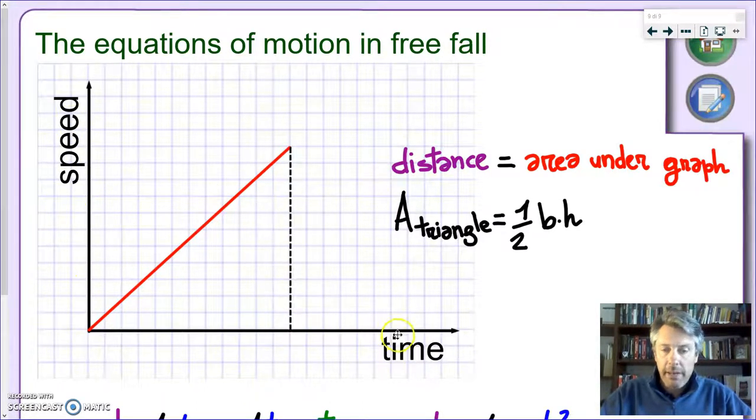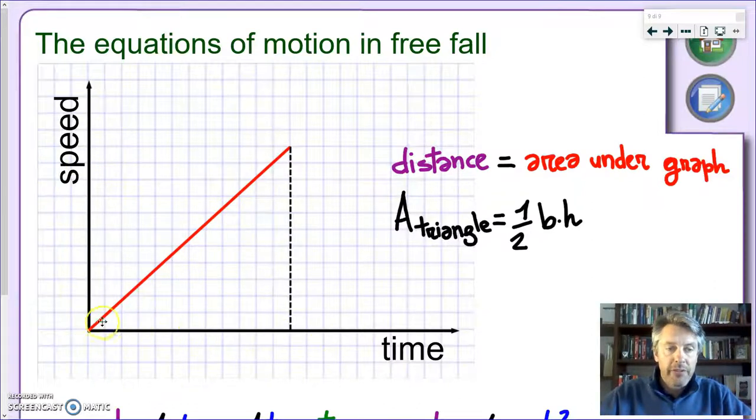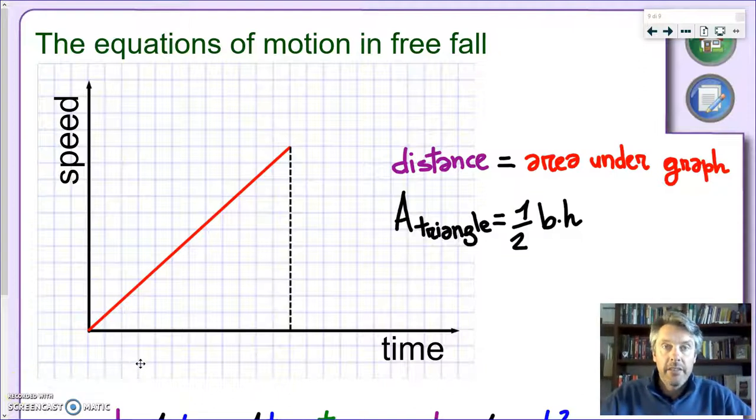Now, as we know already the speed in free fall is always increasing. It's a constant acceleration so in a speed time graph from zero and going up. Now, we know already from our previous lesson that in order to get the distance traveled in a speed time graph you have to look at the area under the graph. So the area under this line here. And we can already recognize the shape. This is a triangle and we know what is the formula for the area of a triangle. It's one half base times height.